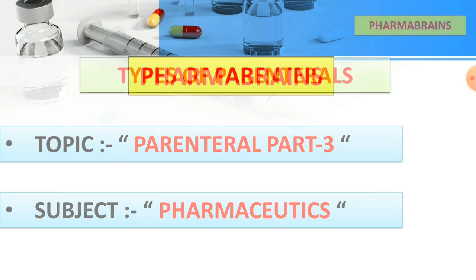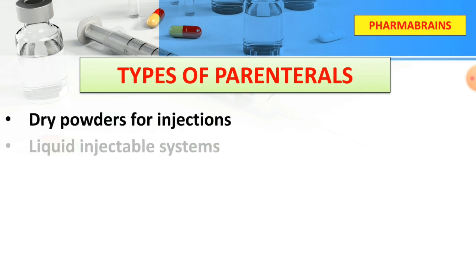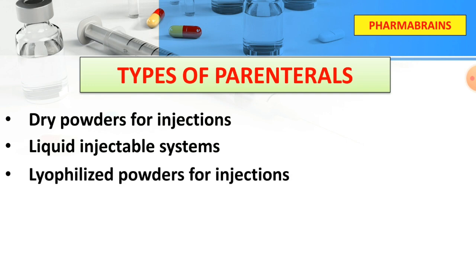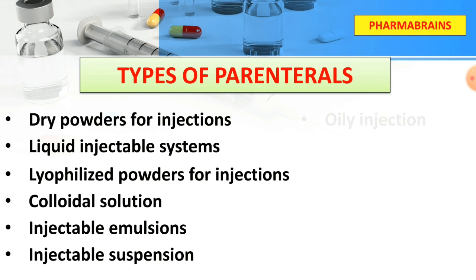Let's start today's video. We will discuss the types of parenterals. There are 7 types: first is dry powder for injections, second is liquid injectable systems, third is lyophilized powders for injections, fourth is colloidal solutions, fifth is injectable emulsions, sixth is injectable suspensions, and seventh is oily injections.